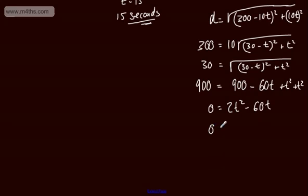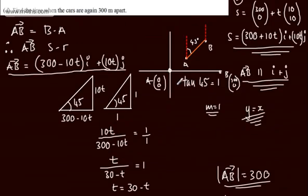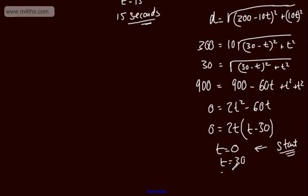So let's take 2t out. So that's going to leave me t minus 30. Now, from this, t gives us 0, or t gives us 30. Now, this is at the beginning. This was the start, and we've seen that, and that's what we would expect. When we're solving that, we knew that they're 300 meters apart initially. So what we can say is the next time they're going to be 300 meters apart is at 30 seconds.